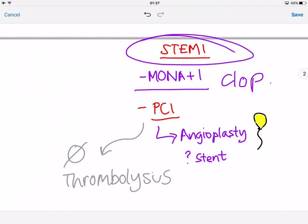PCI is percutaneous coronary intervention - angioplasty. A balloon is inserted into the femoral or radial artery. To prevent the blood vessel from closing up, sometimes a stent is inserted but not always. Some hospitals don't have access to PCI, so if PCI is not available, they will undergo thrombolysis.